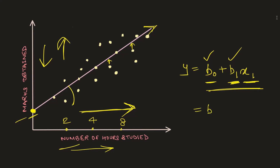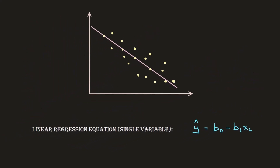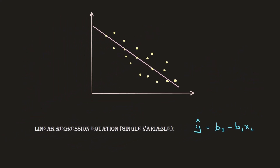But it isn't necessary that you will always have a positive correlation. You may come across scenarios where as the value of your independent variable increases, the value of your dependent variable decreases. In that case the equation for the straight line will change to: y = b0 minus b1*x1.